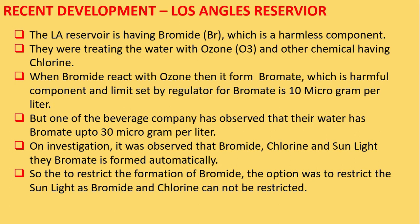The limit set for bromate is up to 10 micrograms per litre. One day, a beverage company observed their water bromate level was up to 30 micrograms per litre and complained to the water supplier. On investigation, the water supplier found that bromide and chlorine from cleaning agents of the water treatment plant, combined with sunlight, were forming bromate automatically, sometimes going beyond the permissible limit. The only solution was to reduce the bromide, chlorine, or sunlight. Since reducing bromide and chlorine was not possible, they decided to restrict the sunlight.